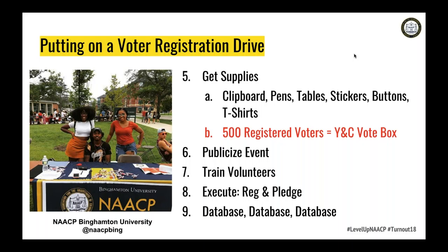Step six: publicize your event — post on social media, post around campus, make sure it's visible to all students you want to reach. Step seven: train your volunteers — make sure they have scripts they're practicing to talk to potential voters. Step eight: execute — register people to vote, and for those already registered, get them to pledge to vote and collect their information. Step nine: database, database, database — make sure you're contacting people throughout your voter turnout campaign so they know relevant information leading up to November 6th.